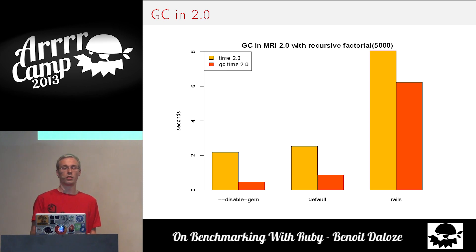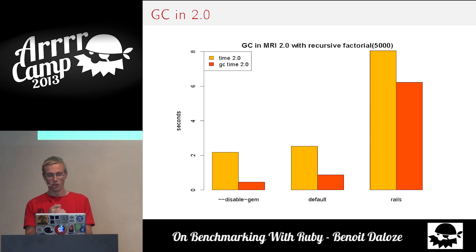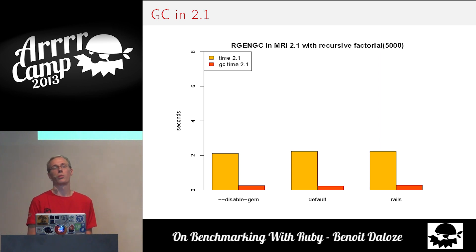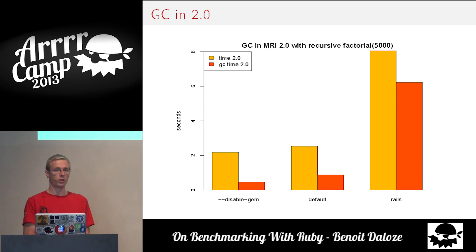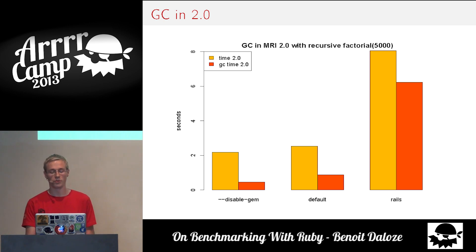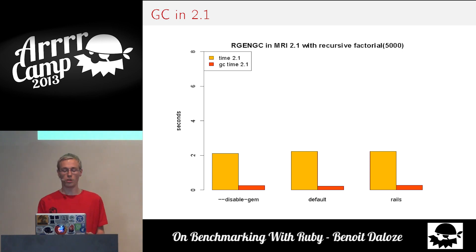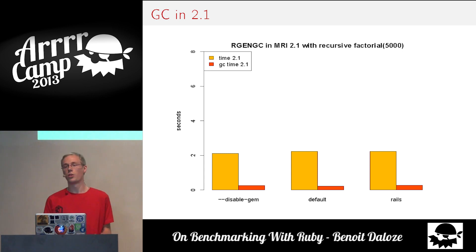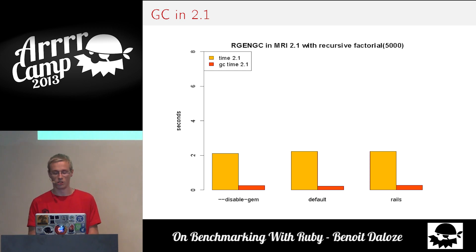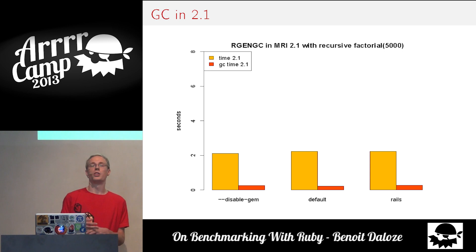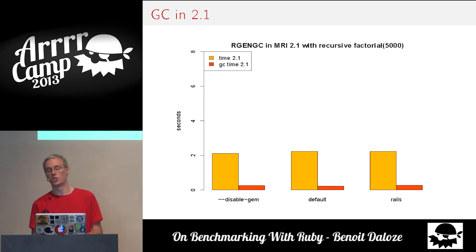The orange bar is the total time and the dark orange bar is the GC time — we clearly see it's the GC that impacts everything. In 2.1 it's magical: we don't have all these problems. It's a bit extreme here because it's a very memory-intensive benchmark, but you should see it in your apps too. When you load Rails you load a lot of objects — mostly strings — that stay around in constants or global variables. With generational GC, Ruby can quickly detect that an object will stay forever, so it only needs to check them infrequently — perhaps one in every minor GC.